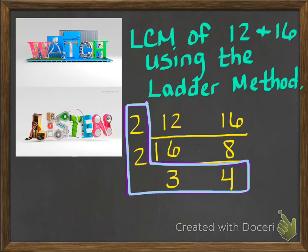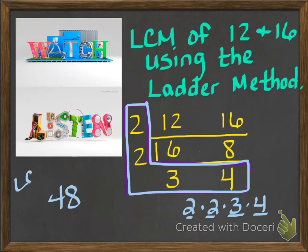You take what's inside the L, so these are all the outside numbers that we have left, and we're going to multiply them together. So we've got a 2, another 2, a 3, and a 4. When we multiply these guys together, 2 times 2 we get 4, times 3 is going to give us 12, and then 12 times 4 is going to give us 48. So the LCM for the numbers 12 and 16 will be 48.